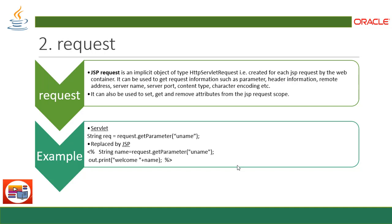`request` is an implicit object of type HttpServletRequest, created for each JSP request by the web container. It can be used to get request information such as parameter, header information, remote address, server name, server port, content type, character encoding, and more. It can also be used to set, get, and remove attributes from the JSP request scope.